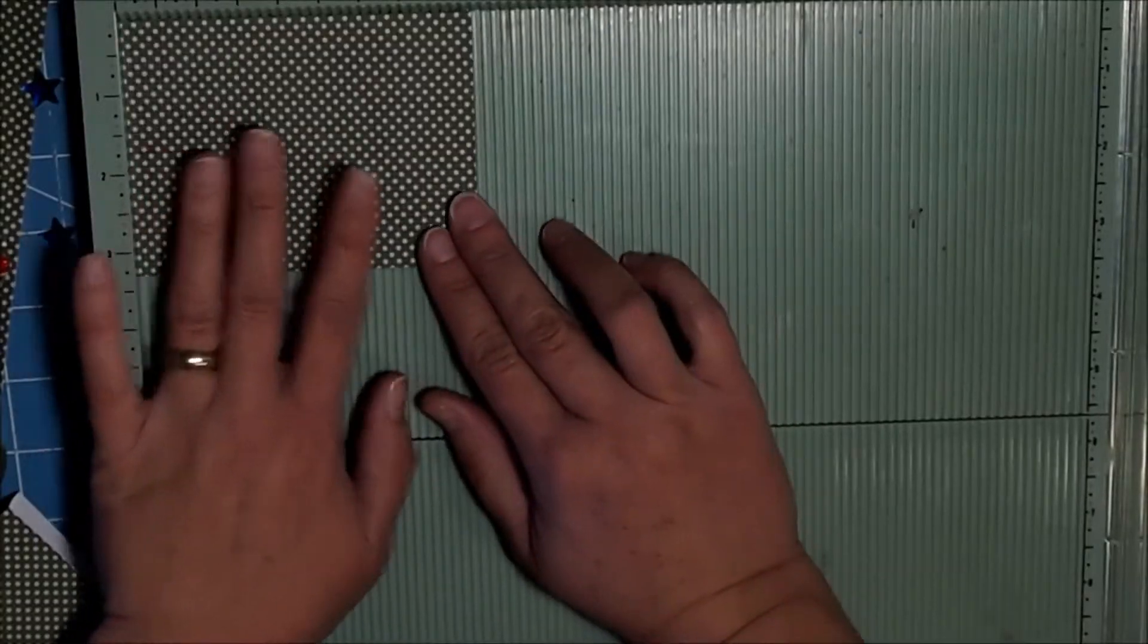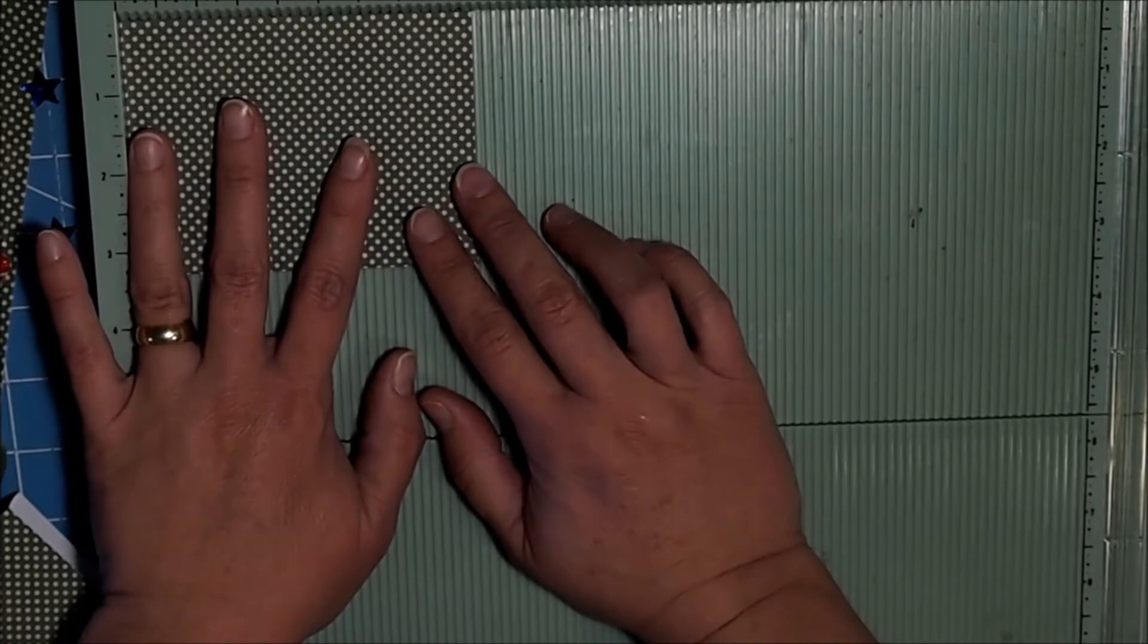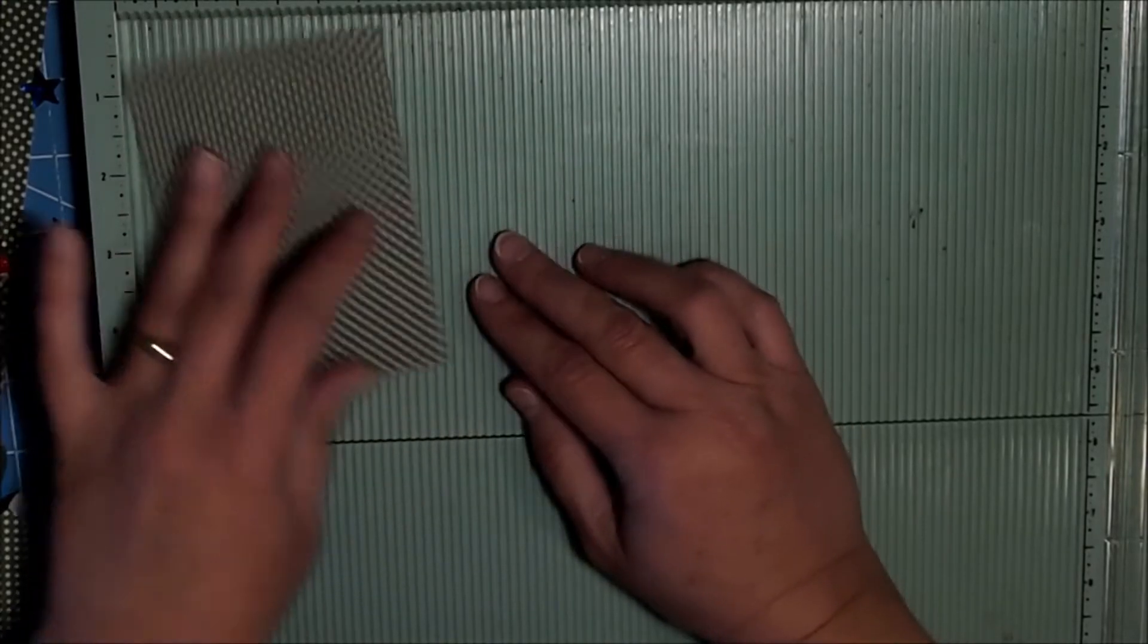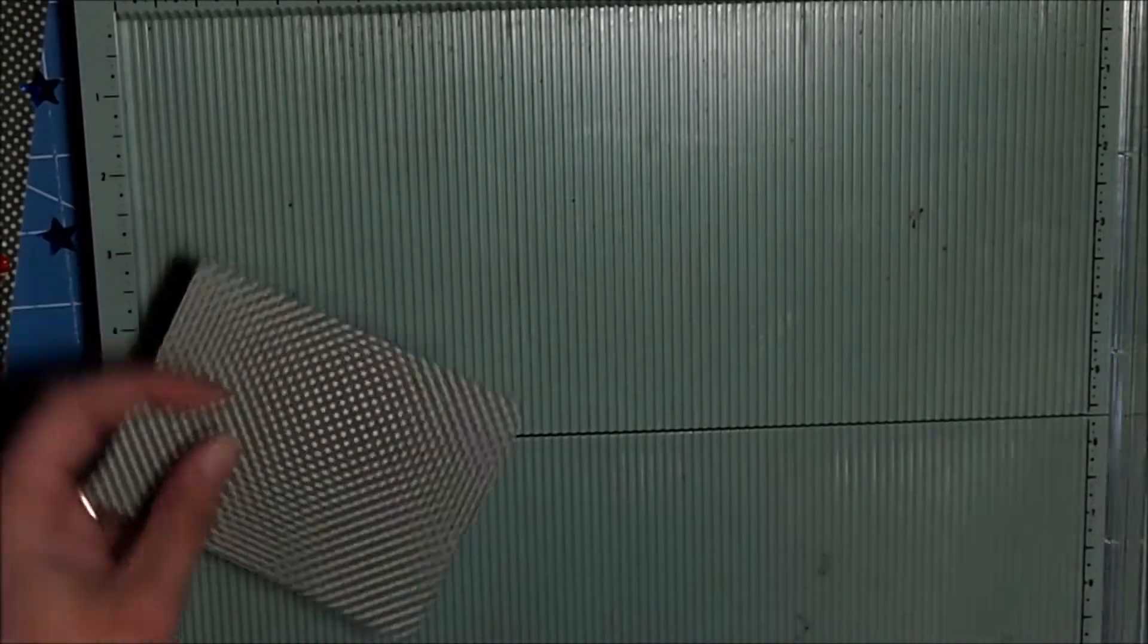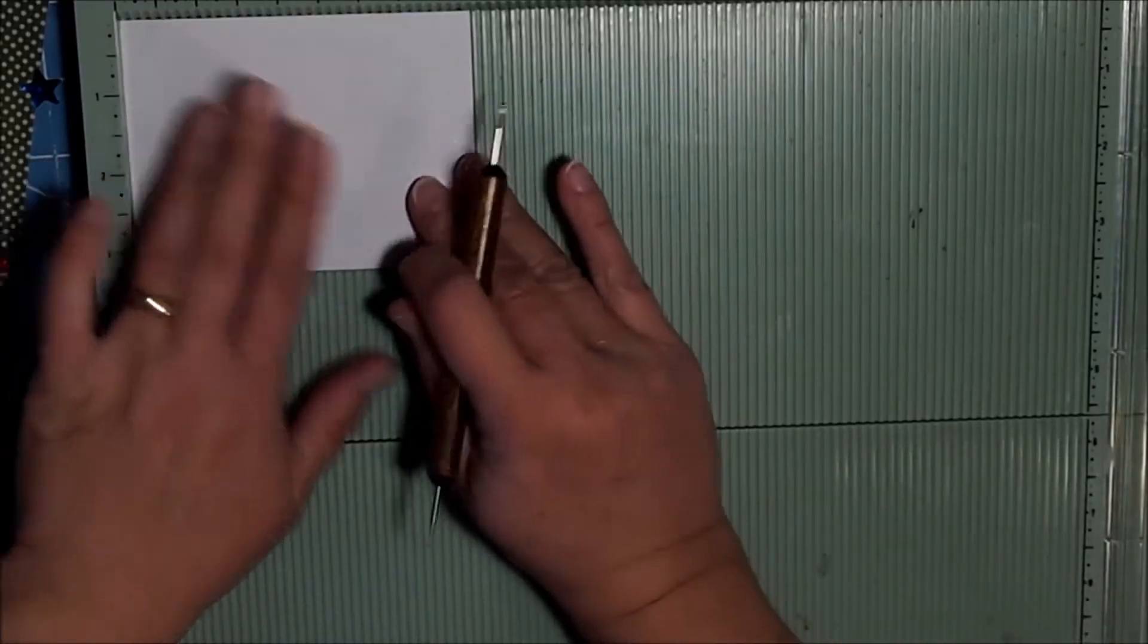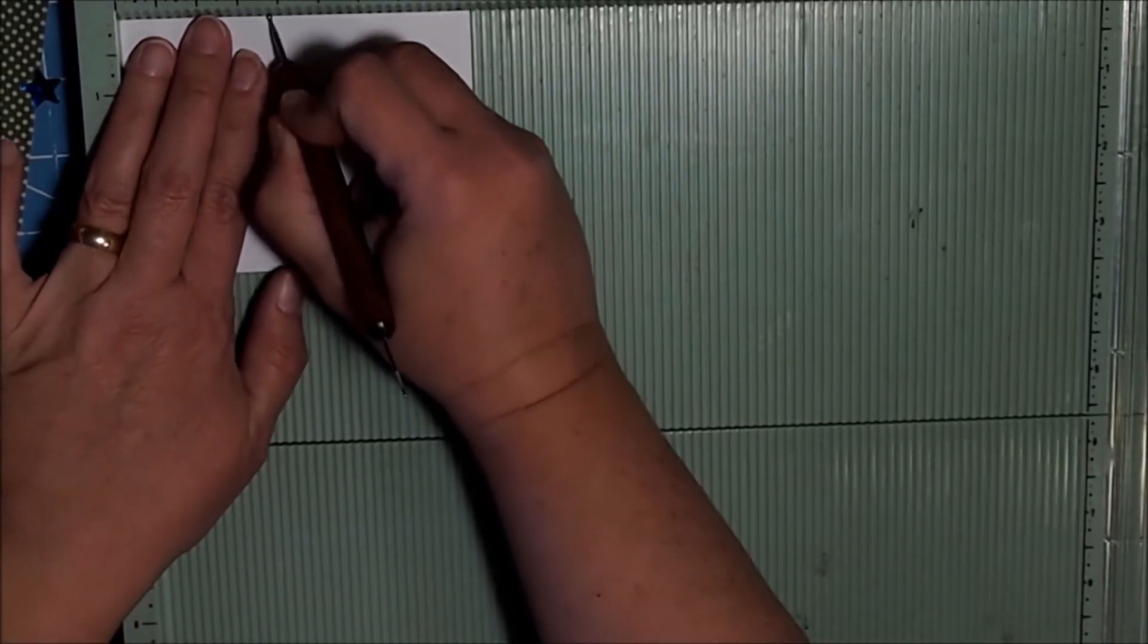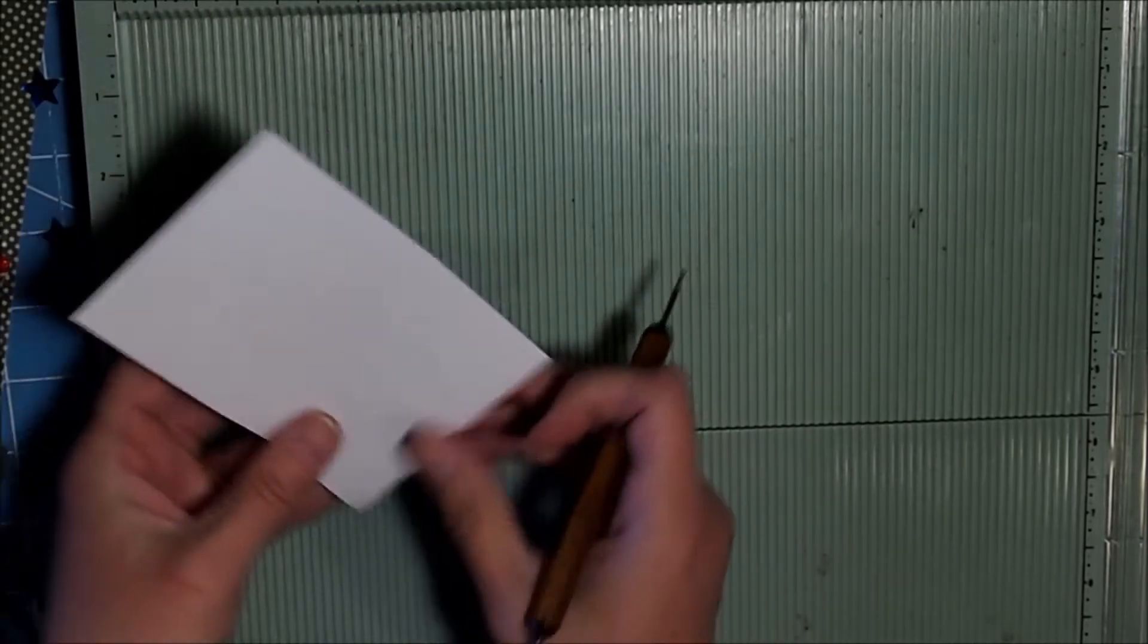What I did is I cut a sheet of paper at four and three-eighths by three, and that works really well for my Tic Tacs. Okay, we're going to score it at one and seven-eighths.